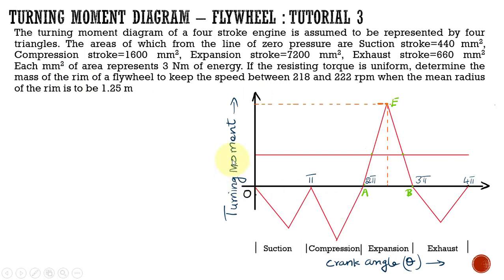This is the turning moment diagram of a four-stroke engine. Here the cycle is completed in 720 degrees, that means 4π. The areas of the suction, compression, and exhaust strokes are below the zero pressure line — that means they are negative. During the expansion stroke, we have the positive energy.